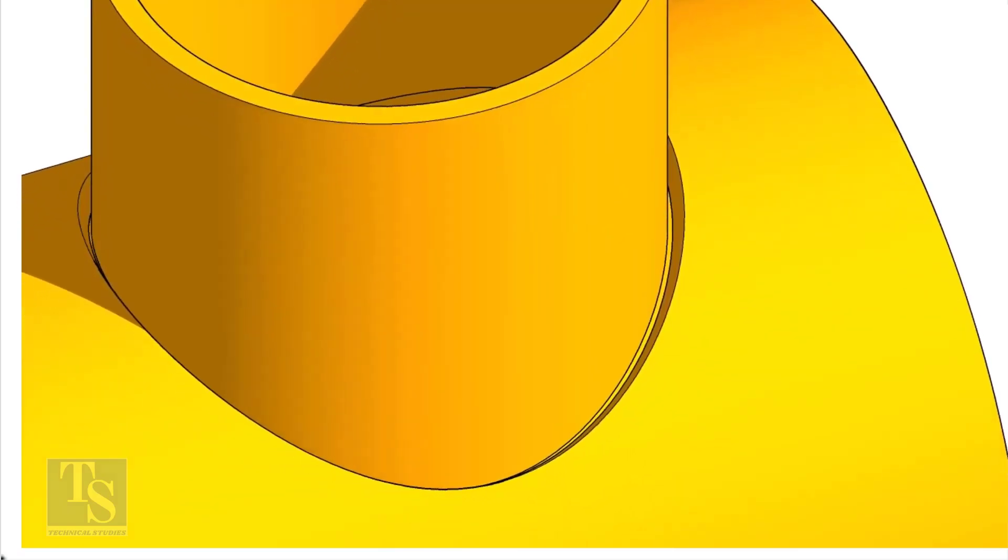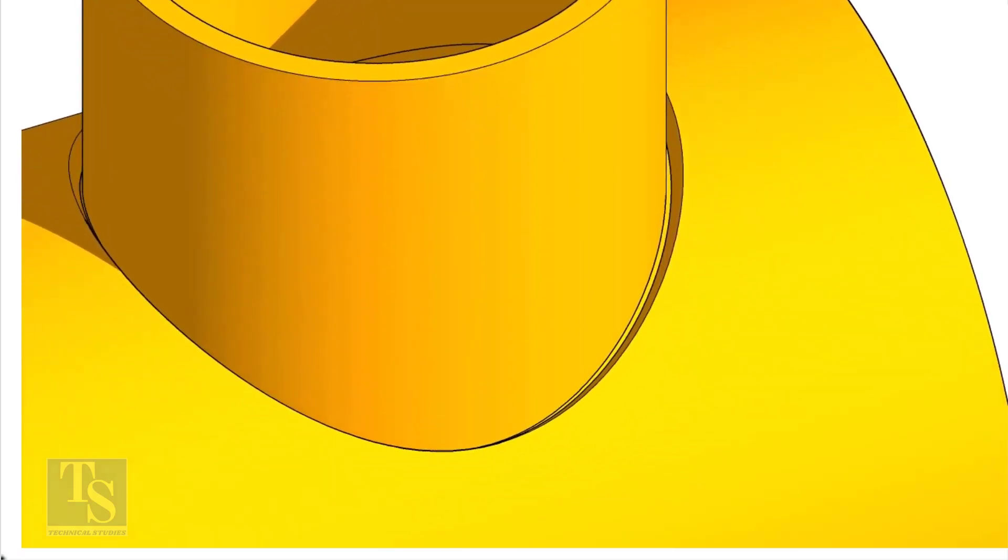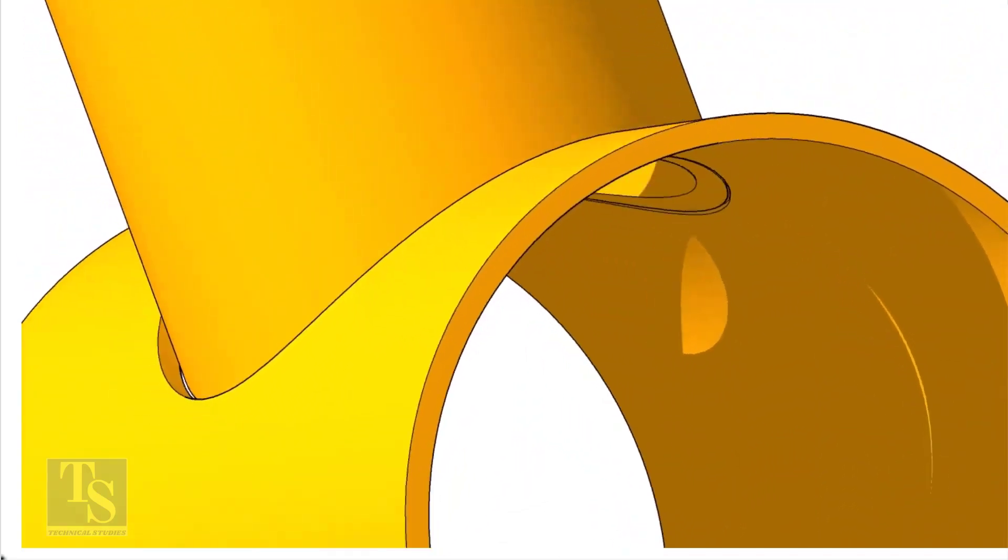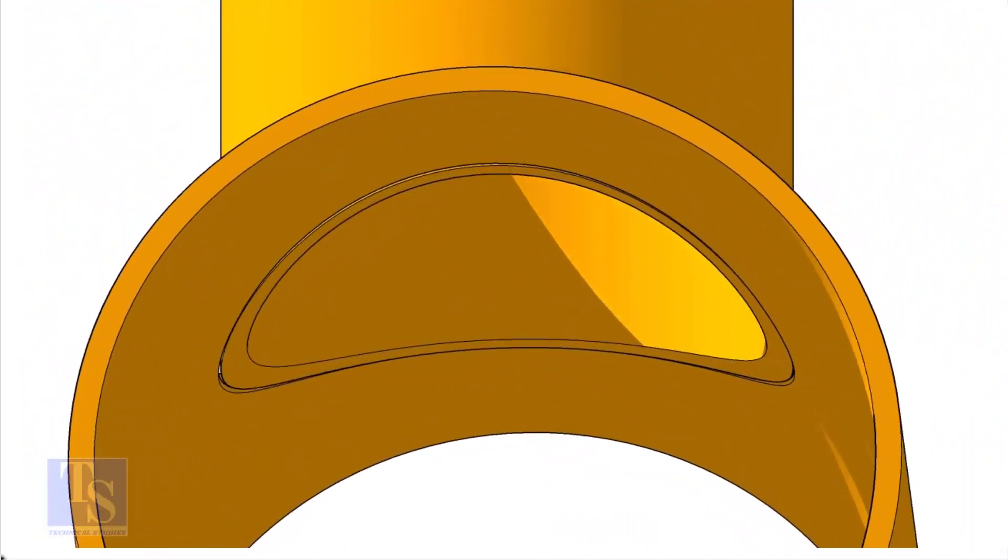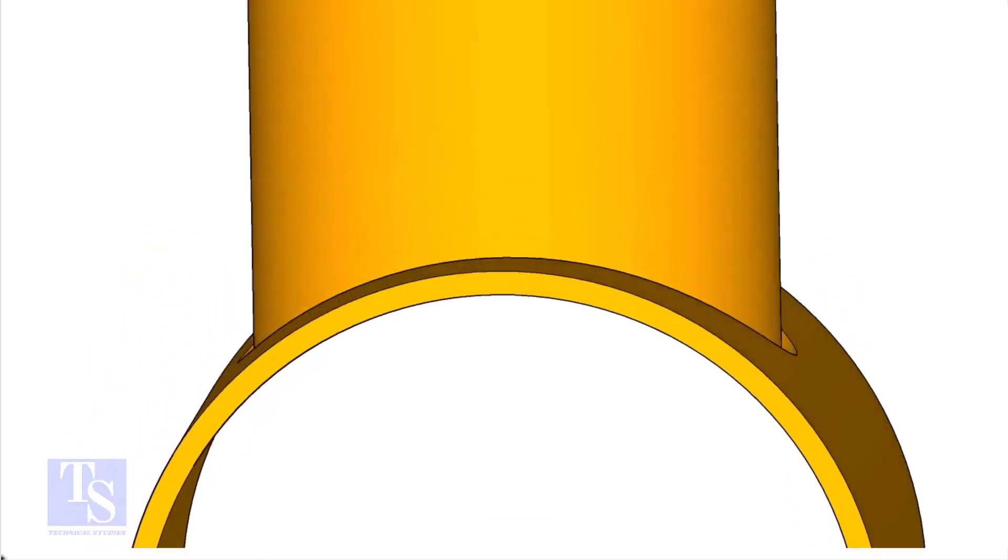On the branch pipe, there is no bevel preparation, but the cut-back cut is done. The end of the branch is level with the inside diameter of the header pipe.